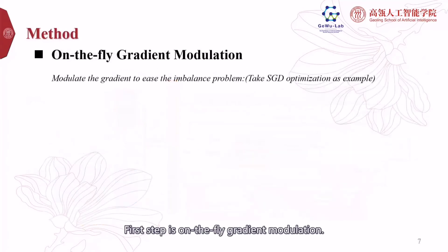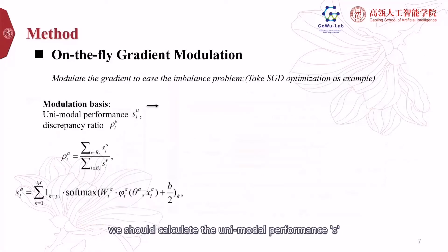First step is on-the-fly gradient modulation. We take SGD optimizer as example. To begin with, we should calculate the unimodal performance S by taking apart the logit prediction into two parts, and then calculate the ratio of two modalities as a rule.